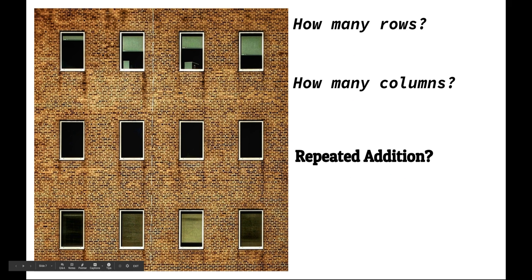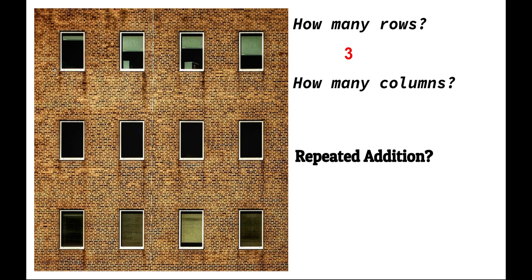Let's do one more. This time I'd like you to pause the video and see if you can do this. How many rows? How many columns? And then write a repeated addition equation. How many rows of windows do we have here? There are three rows of windows — one, two, three. And how many columns? There are four — one column, two, three, four. There are four columns in all.